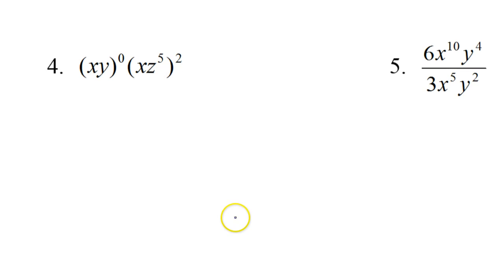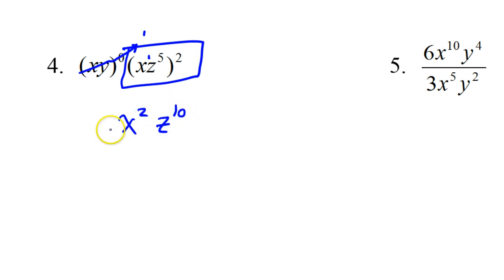Number 4. What happens when you have something raised to the 0 power? Right, it just goes away. It becomes a 1. Technically, but 1 times anything is still itself, so that part is gone. So I'm really just dealing with this aspect. Be careful, this is like x to the 1 power. So this 2 is going to wind up multiplying both of these. So I'm going to wind up with x squared z to the tenth power.